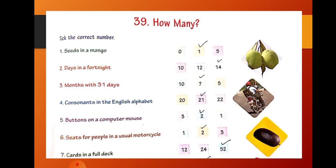With each and every statement, you will find three options and you have to tick the correct number. Now, first one, seeds in a mango. And the three options are 0, 1 and 5. And you know well that a mango have only one seed. In a mango, you can find only one seed. So, tick one.